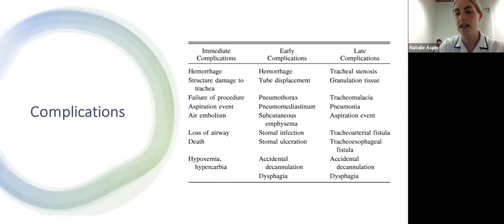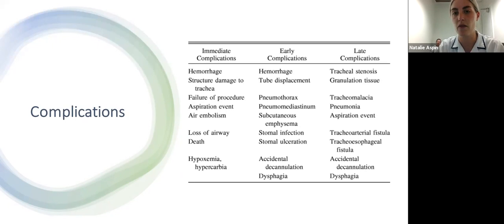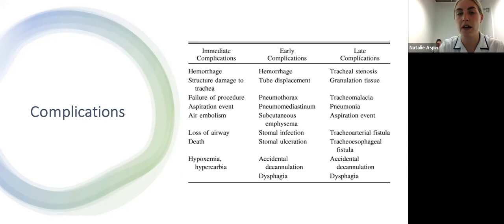Tracheostomies aren't completely risk free and there are complications that come along with them. Immediate complications - probably some of the ones we often see are bleeding; don't be surprised if you've seen a patient with a tracheostomy inserted within the last 48 hours and on suction you potentially get a lot of blood-stained or very bloody secretions. Into the later stages, we often see granulation tissue in patients who've had tracheostomies in for a long period, which sometimes makes it quite hard when it comes to decannulation.